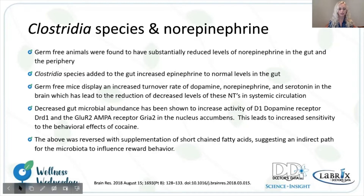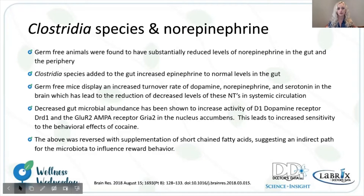Another consideration here is short-chain fatty acids. They are involved in this dopaminergic reward pathway and are directly derived from the microbiome bacteria. So there is a strong connection between the gut microbiome abundance and diversity and the dopaminergic pathway.